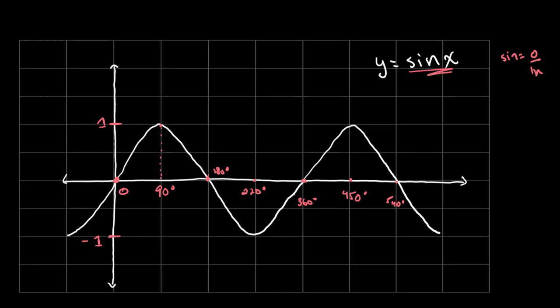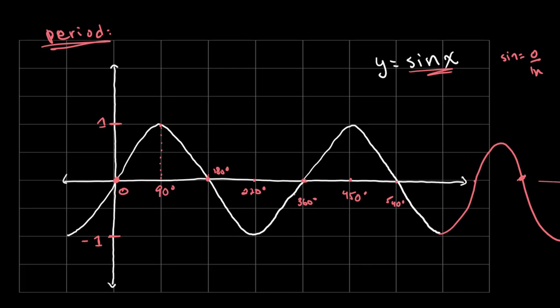Another property we can look at is the period of this graph. The period refers to how long it takes for the graph to repeat itself. This is like a repeating wave, so if we were to continue, the graph would just keep going up and down in the same fashion. For example, from here to here is 180 degrees, and each corresponding interval is also 180 degrees.